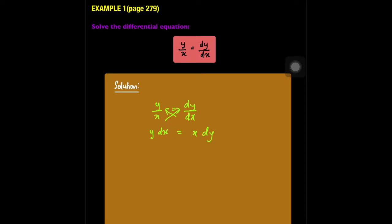Then put x and y to one side: 1 over x dx is equivalent to 1 over y dy. Integrate both sides. You will get ln modulus of x equivalent to ln modulus of y plus C.